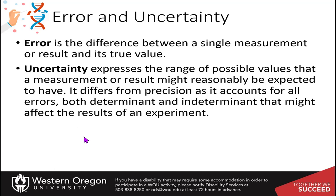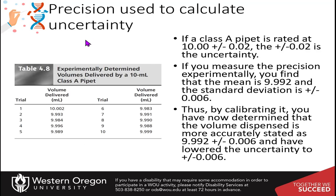Linking this to uncertainty: error is the difference between a single measurement and its true value, measured by subtracting the mean from mu or computing percent error. Uncertainty expresses the range of possible values a result might reasonably have, differing from precision in that it accounts for all errors — both determinant and indeterminate — that might affect the result.